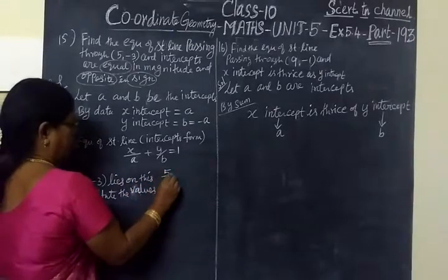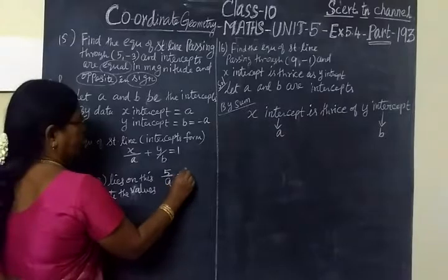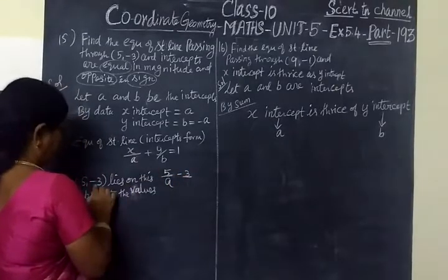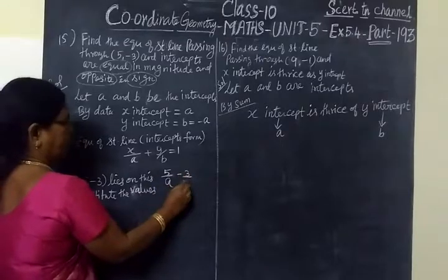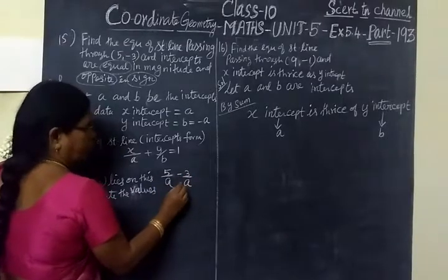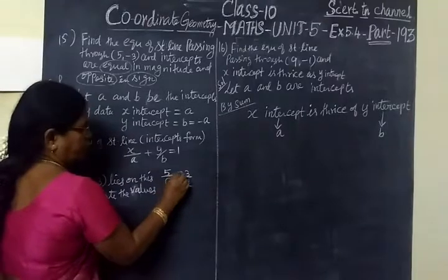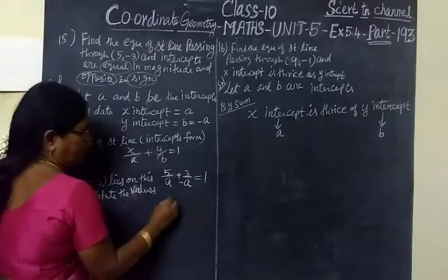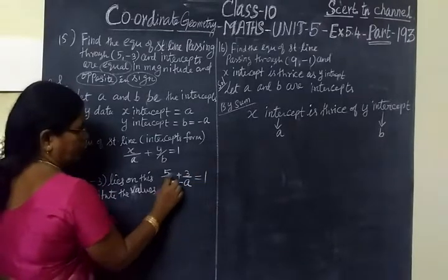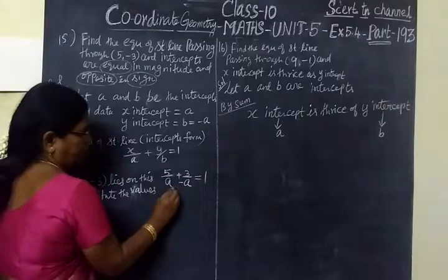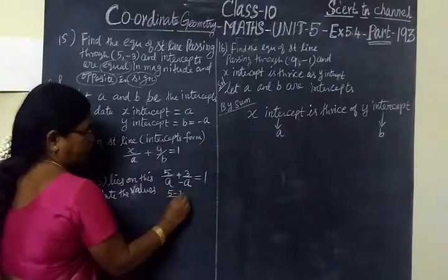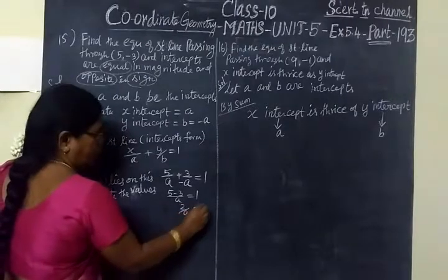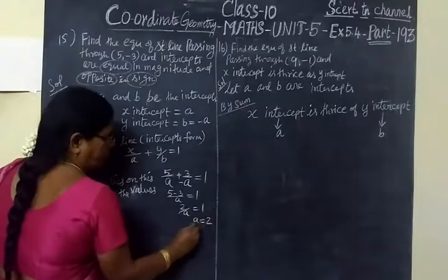So the equation becomes x by A plus y by minus A equals 1. Now the point (5, -3) lies on the straight line, so we substitute x equals 5 and y equals minus 3. Instead of B we write minus A. This gives us 5 by A minus 3 by minus A equals 1, which simplifies to 5 by A plus 3 by A equals 1, so 2 by A equals 1, which implies A equals 2.